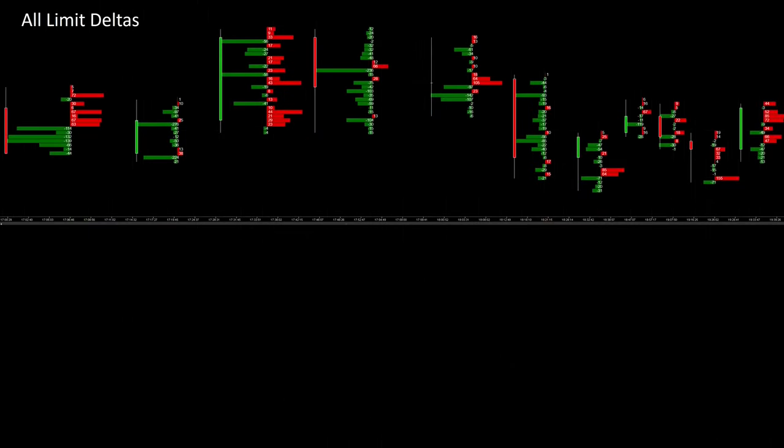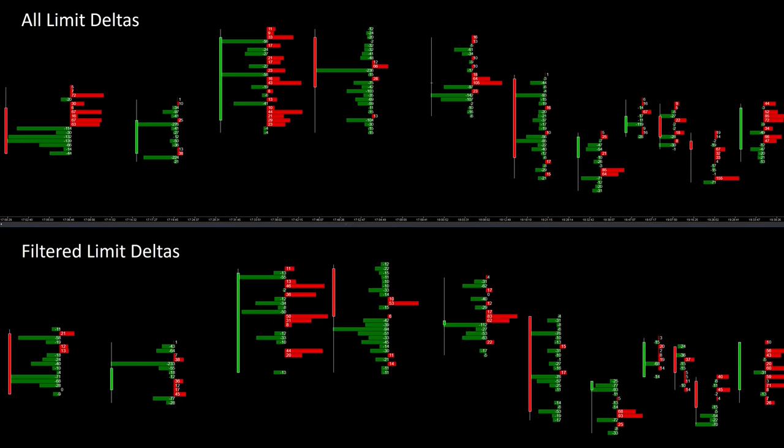For example, here you can see all limit deltas that were created in 15 minutes. Below that, I have broken down the filtered limit deltas that are relevant to me and, although the display is independent of time, converted it into a quarter of an hour. At first glance, there doesn't seem to be much difference, but on closer inspection it looks a little different.